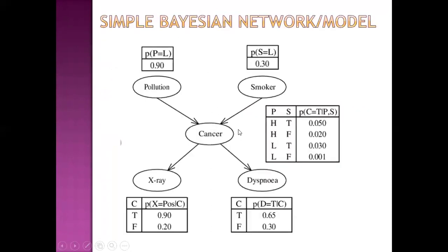This is a basic example of a Bayesian network. The underlying data behind this Bayesian network have these variables: pollution, smoker, cancer, x-ray, and dyspnea. There are these five underlying variables and these are nodes. Each variable is depicted as a node and the relation between variables is depicted as edges, which are usually directed in a Bayesian network. Each node has an associated probability.